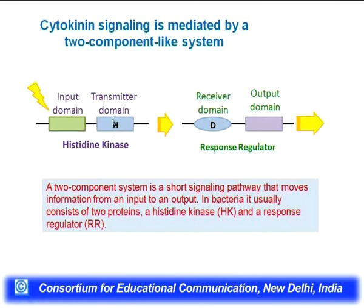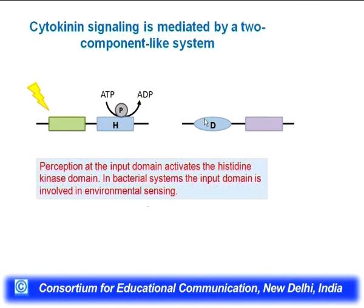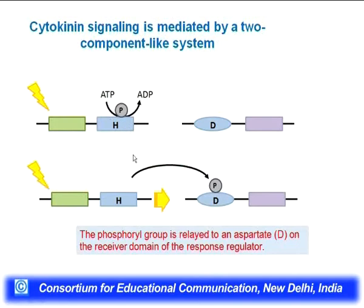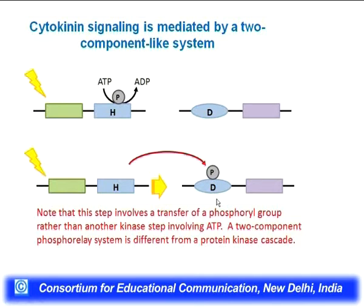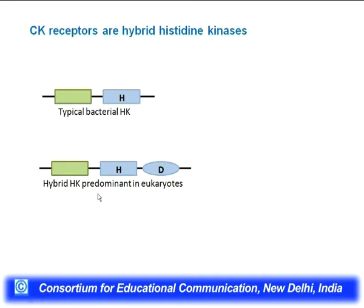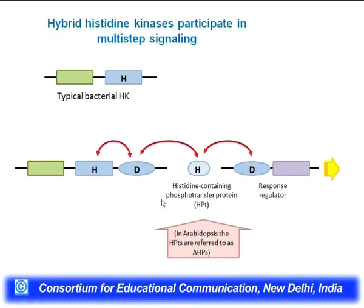The first molecule is a histidine kinase that is phosphorylated upon activation. This phosphate can transfer to the receiver domain of the next molecule, which has aspartic acid — this is how signal transduction takes place. In plants, quite often the first molecule is a hybrid molecule — it has both a histidine and an aspartate domain. So the kinase relay goes: histidine is phosphorylated, that phosphorylates aspartate, and aspartate to histidine, and so on down the cascade.